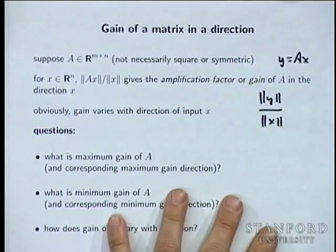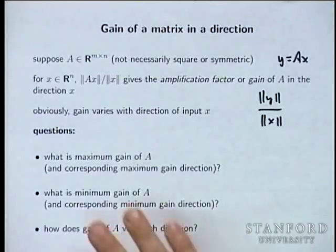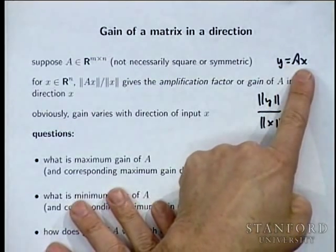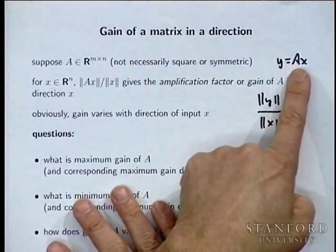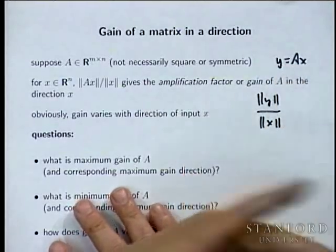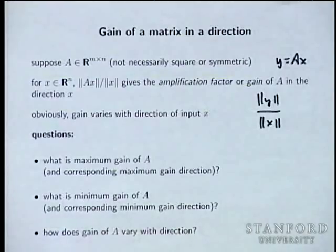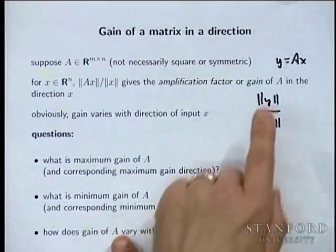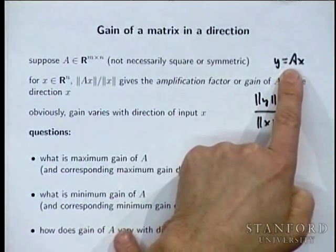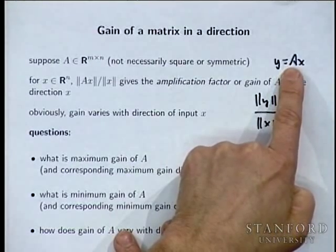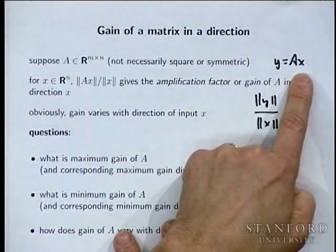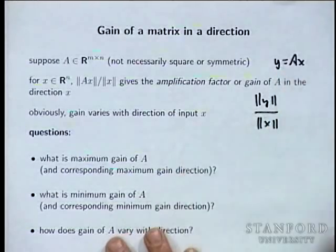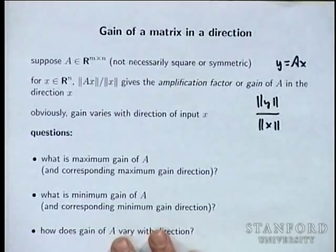This is at the heart of the overloading y = Ax. If you have y = ax where a, y, and x are scalars, it's simply multiplication. When you have a matrix, it's much more interesting. The amount by which the size of y divided by the size of x — that's the gain of the matrix A in the direction x — varies with direction. That's exactly what makes it interesting.